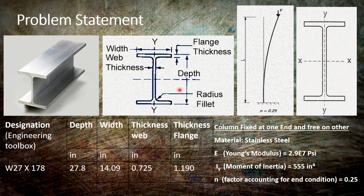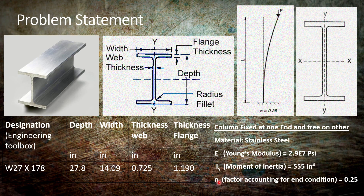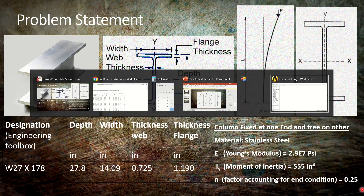The depth of the beam is 27.8, the width is 14.09, web thickness is 0.725, and flange thickness is 1.19. Young's modulus for steel is 2.9 × 10^7. The moment of inertia along the y-axis is 555. The value of n is 0.25 because one end is fixed and the other end is free.